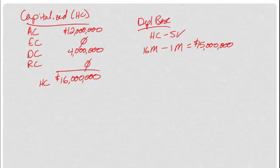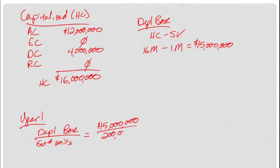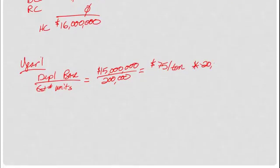And now I'm ready to figure out year one and how much I've depleted. Depletion base divided by the estimated number of units — tons of copper ore in this case. So $15 million divided by 200,000 tons gives us $75 per ton. In year one, we extracted 20,000 tons. So $75 times 20,000 — my total depleted for this first year is $1.5 million.